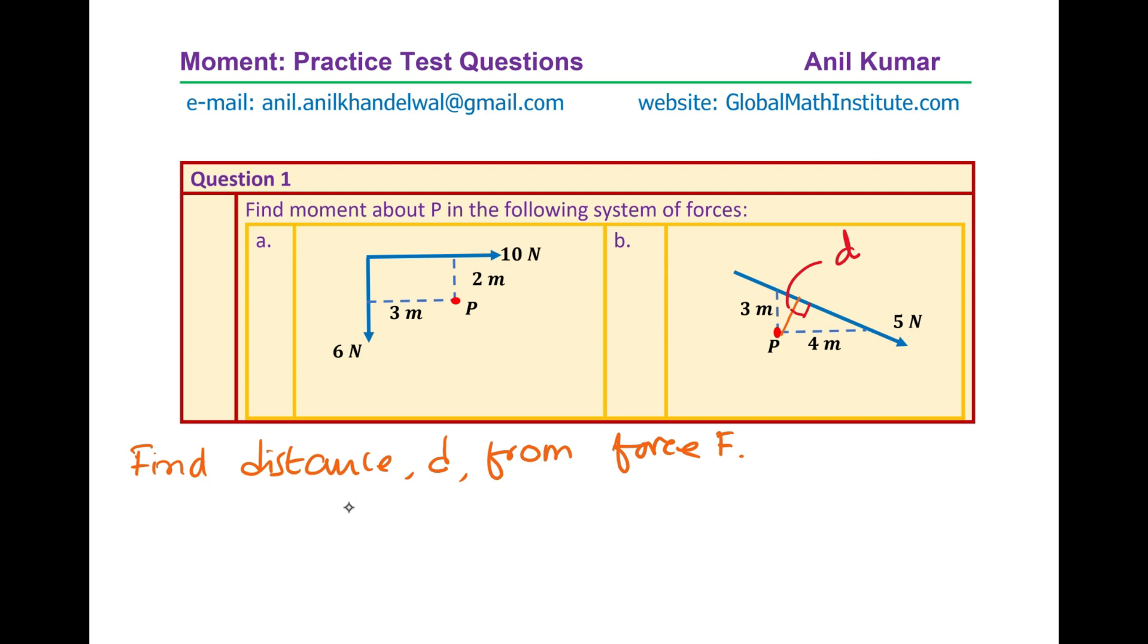So now the shortest distance is this distance d. How much is that? This is what you need to calculate. Now to find this distance we need to first find what this angle theta is, then we can find what the distance is. So let me just label this to explain better.